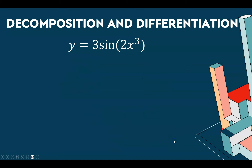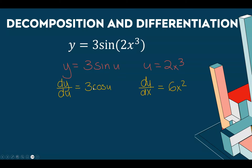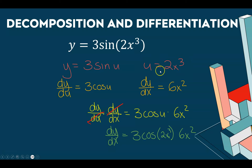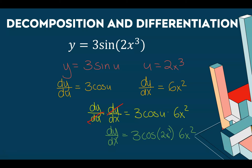For y = 3sin(2x³), the structure is 3 sine of something where that something is 2x³. The derivative of 3sin(something) is 3cos of that same something, so dy/du = 3cos(u). The derivative of 2x³ is 6x², so du/dx = 6x². Bringing it together: dy/dx = 3cos(2x³) · 6x². In the next video, part three, we'll use this same idea to do the chain rule the short way.